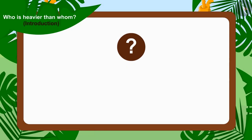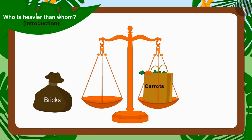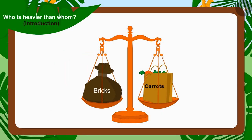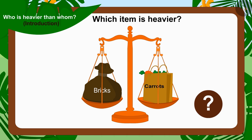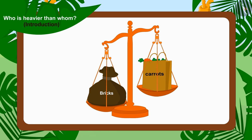Now the competition will be between Sher Khan and Bunny. Uncle replaced Bhola's sack with the sack filled with Sher Khan's bricks. Children, can you tell which of these items is heavier? Your answer is absolutely correct. This time, the scale tips towards the sack filled with Sher Khan's bricks.